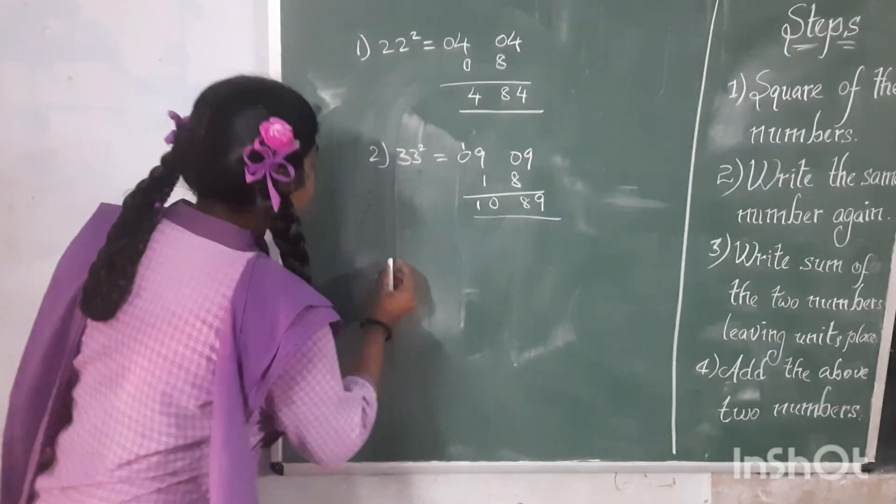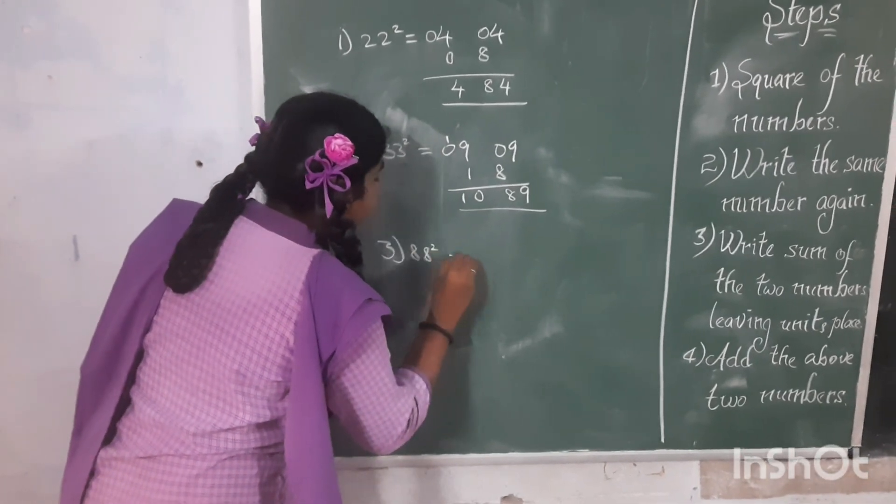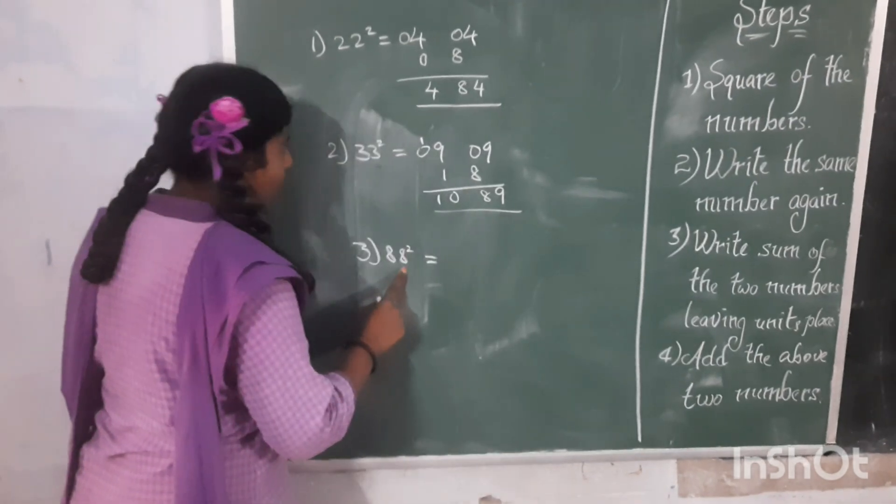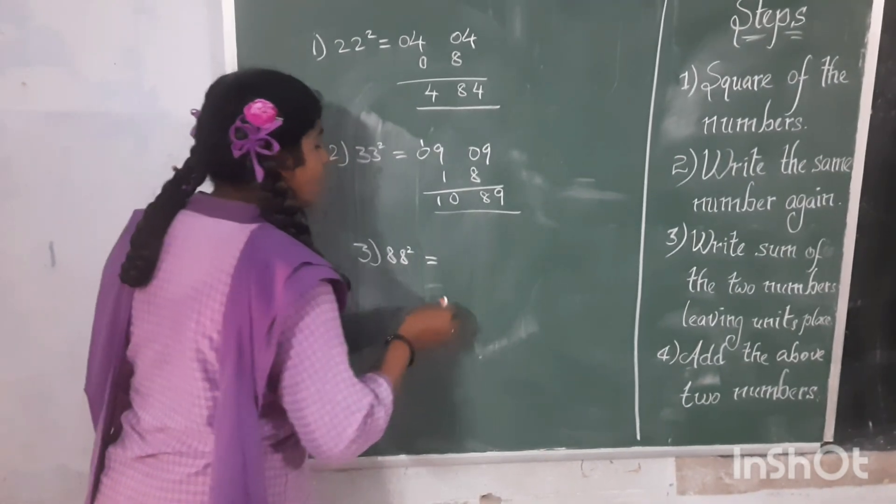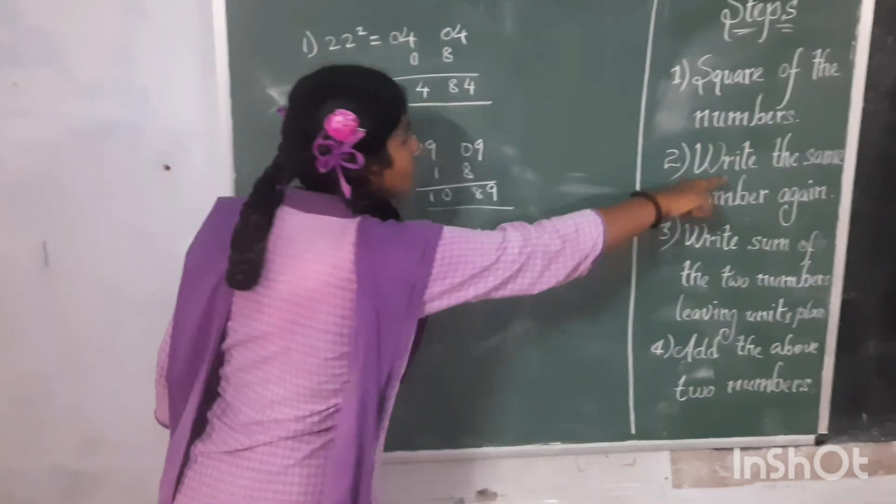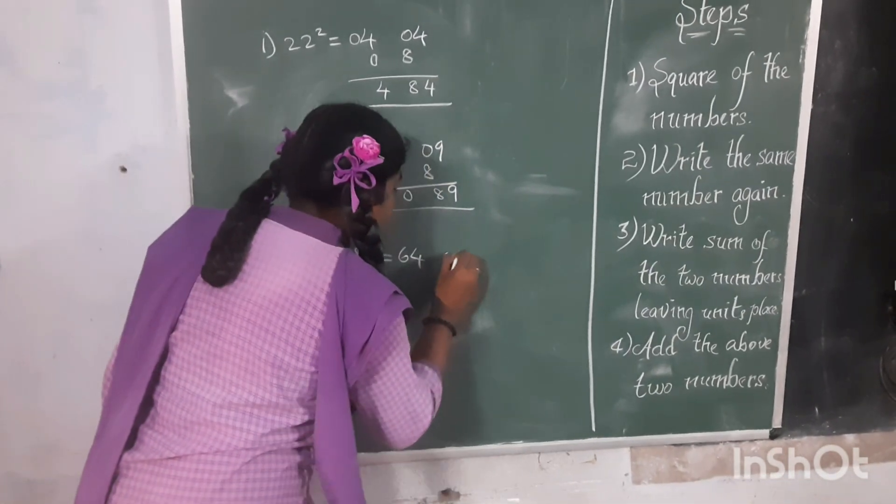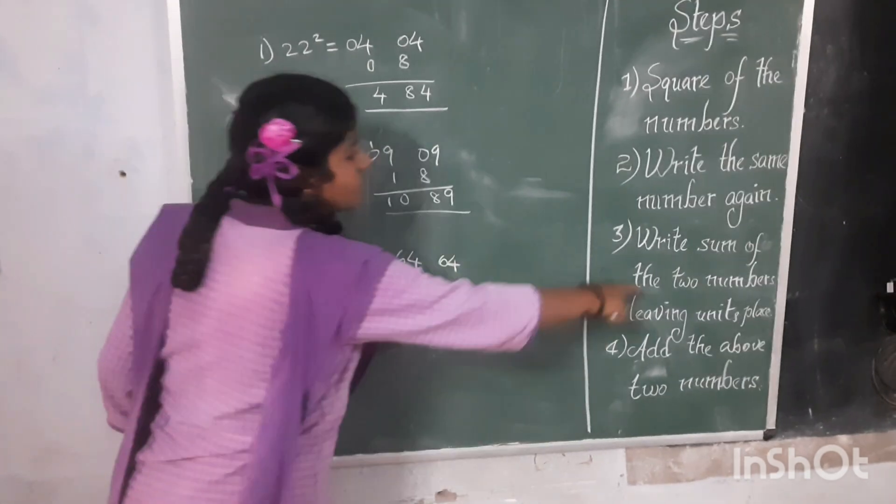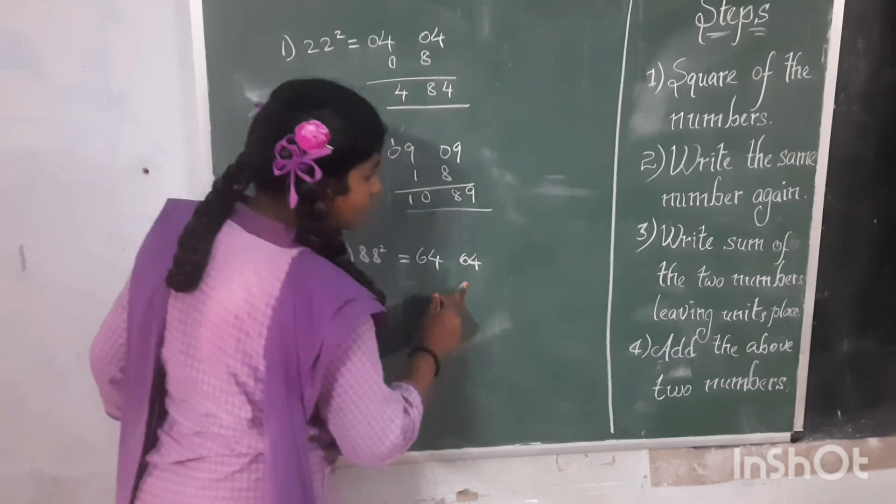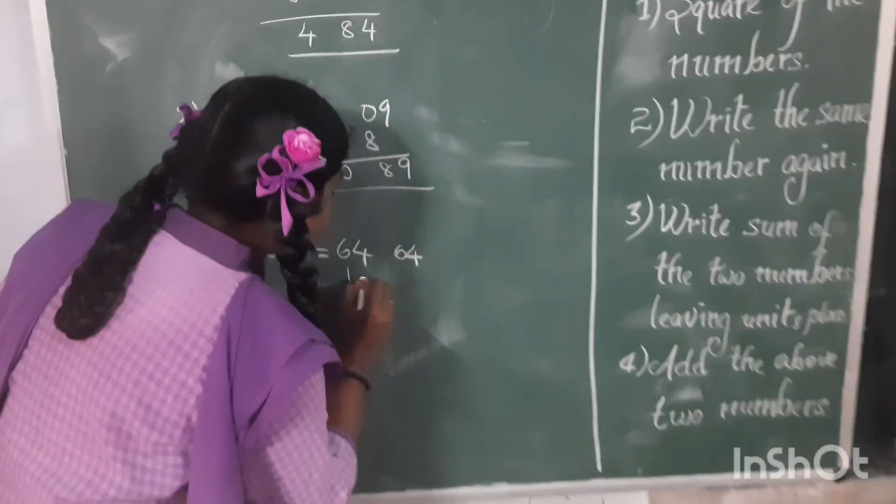88 square. Step 1, square of the number. Here 8 is a number which square is 64. Second step, write the same number again. 64. Third step, write the sum of the two numbers leaving in its place. Add the two numbers. 64, 64, 128.